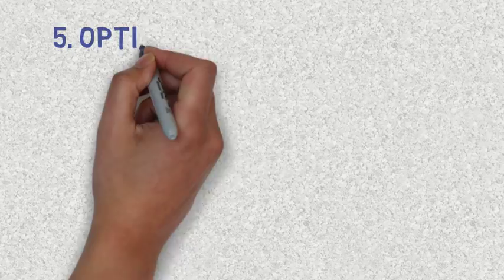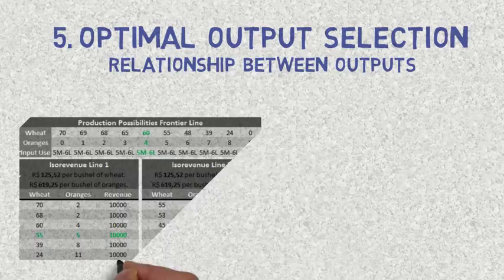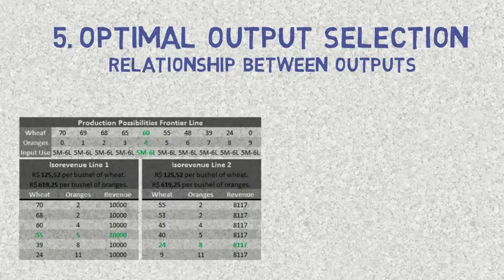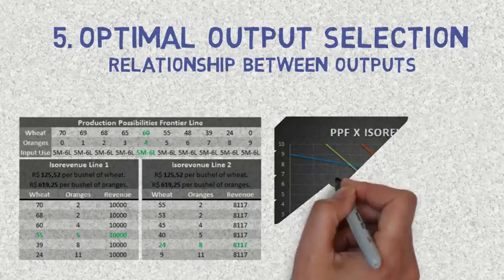Producers must choose how much output to produce using the inputs they have. In the following example, we suppose that the farmer has five machines and six workers. The farmer is able to produce seventy bushels of wheat and zero bushels of oranges using that much input, or seventy-nine bushels of wheat and one bushel of oranges. There are ten possible combinations of output that can be produced with the same amount of input. The production possibilities frontier (PPF) is the curve created using such data, representing the combination of two outputs that can be produced using a constant level of inputs. If the number of machines and workers were bigger, the PPF would shift out and to the right.